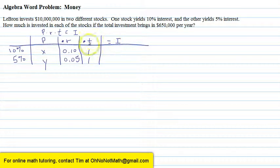So now we apply the formula P times R times T. For the 10% stock, we have X times 0.10 times 1 is 0.10X. For the 5% stock, Y times 0.05 times 1 is 0.05Y.